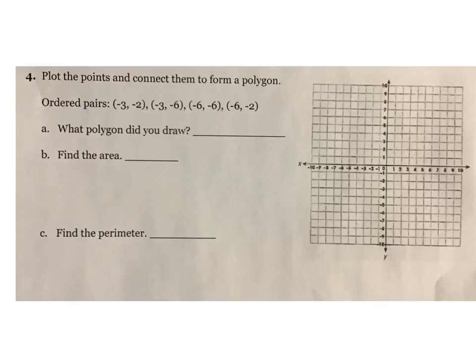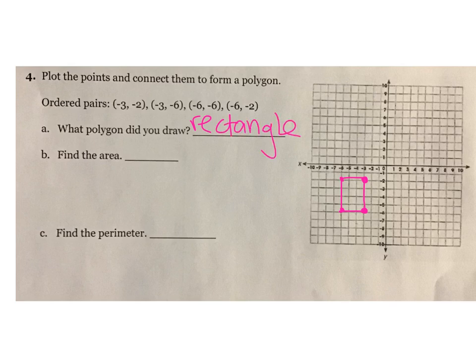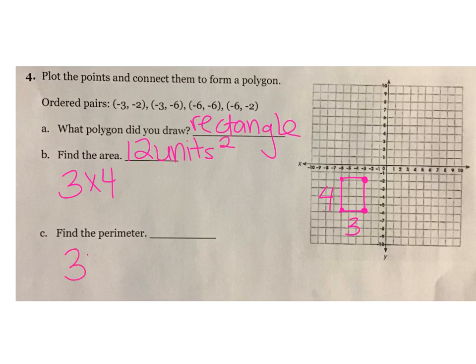These ones are going to be a little bit different — we're giving you the points and then you have to tell me the polygon and find the area and perimeter. Remember, we're always starting at our origin. So we've got negative 3, negative 2; negative 3, negative 6; negative 6, negative 6; and negative 6, negative 2. Connect them all the way around — that is going to be a rectangle. Length and width are 3 by 4, so 3 times 4 gives me 12 units squared. Perimeter: 3 plus 3 plus 4 plus 4 gives me 14 units... wait, that's 8 plus 6, which gives me 14 units.